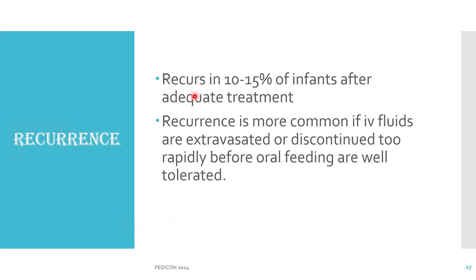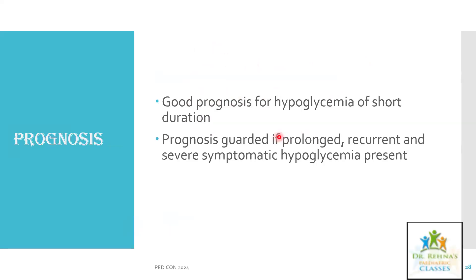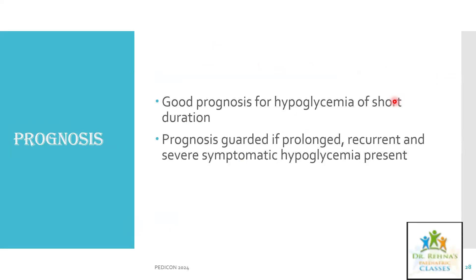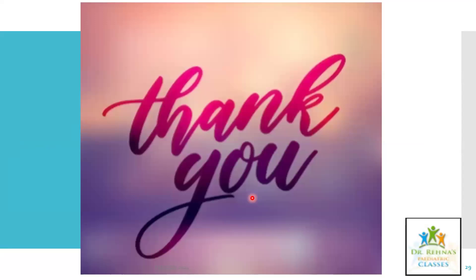Recurrence occurs in 10 to 15% of infants after adequate treatment. Recurrence is more likely if IV fluids are stopped too rapidly — causing rebound hypoglycemia — or if the infusion is accidentally interrupted without the physician's knowledge. Prognosis is excellent for hypoglycemia of short duration, but guarded if hypoglycemia is prolonged, recurrent, and severe.